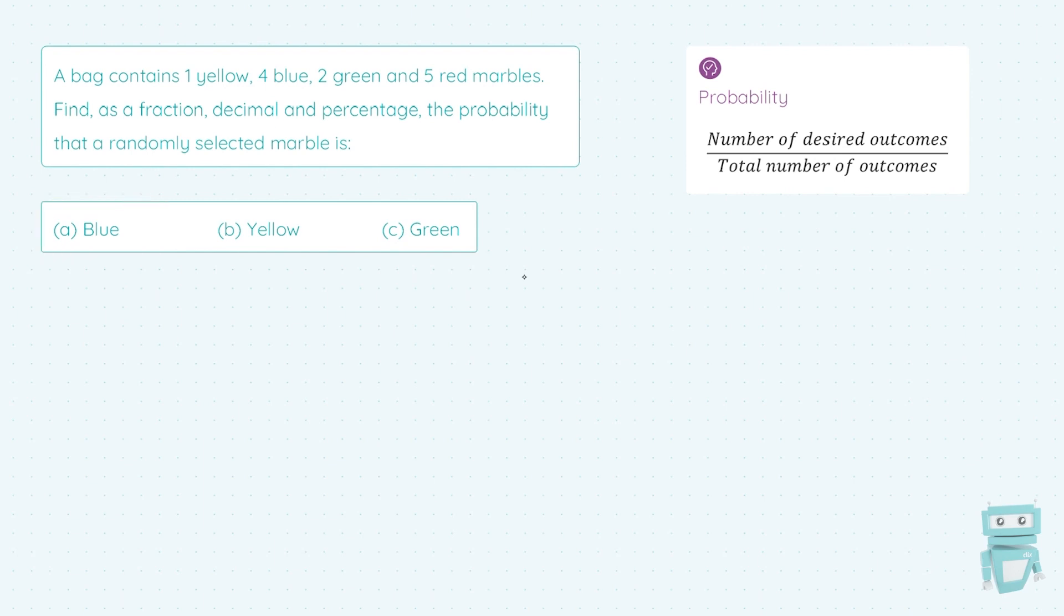Now, look, the first thing I'm going to be telling you to put down in any probability situation is your total number of outcomes. Here, that's the total number of marbles in the bag. So I'll be adding together 1 and 4 and 2 and 5 to know that my total is 12. And we're going to go ahead and use this in our question.